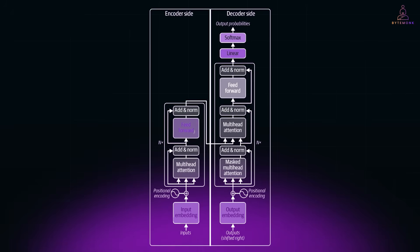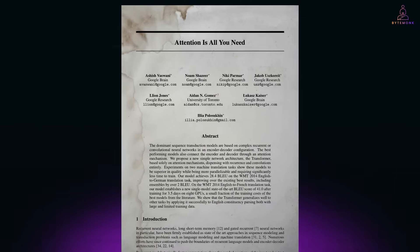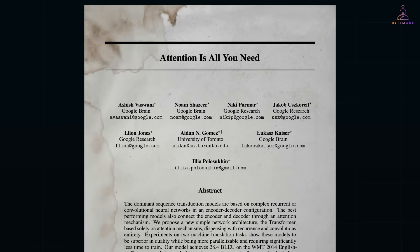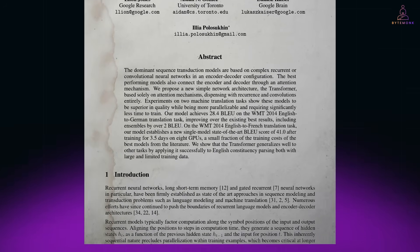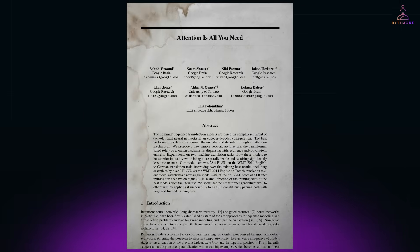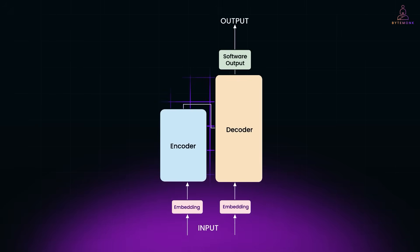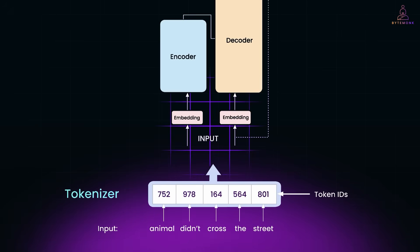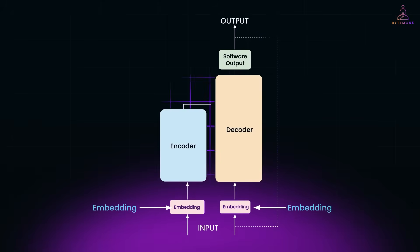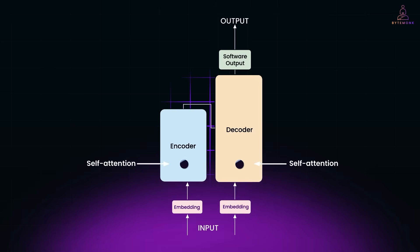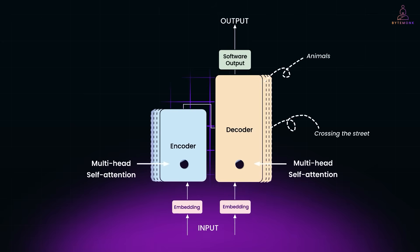And then came the real breakthrough. In 2017, Google released the paper 'Attention Is All You Need.' It said: what if you drop RNNs entirely? No more one-token-at-a-time memory updates. Instead, rely only on attention. And that's how transformers were born. It made models faster, more parallel, and way better at capturing long-range context. I've broken this down step by step — how the encoder processes inputs, how the decoder generates outputs, and how attention flows between them — in my LLM crash course. Basically, everything in a transformer runs in parallel, not step by step like RNNs, making them much faster to train and more powerful.